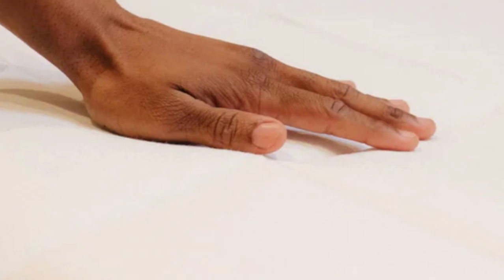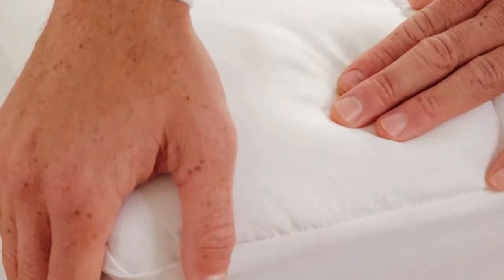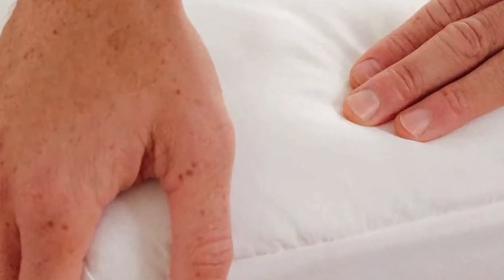The Slumber Cloud mattress pad elaborates on this technology using tensile-based Outlast meant to reduce heat and moisture buildup when you're too hot and releasing heat if you start to get cold.